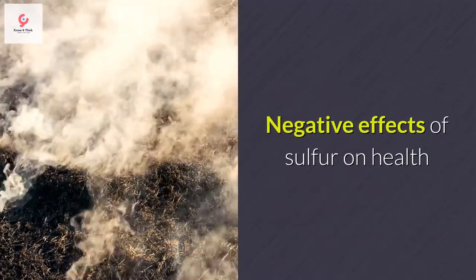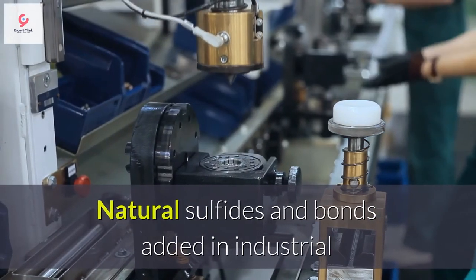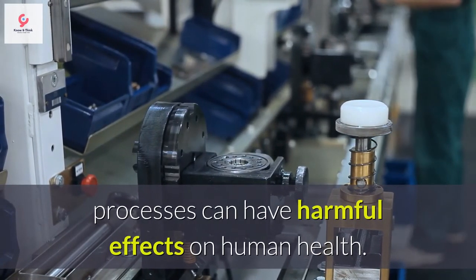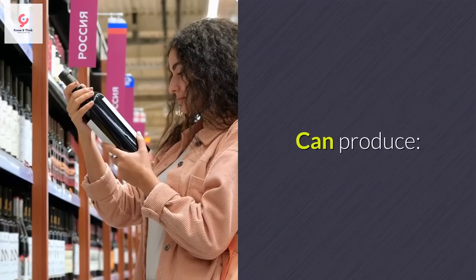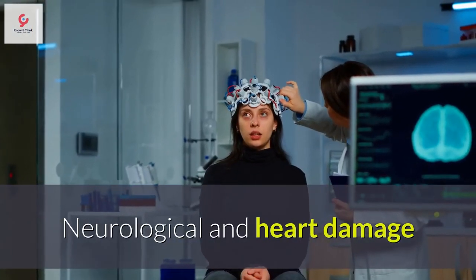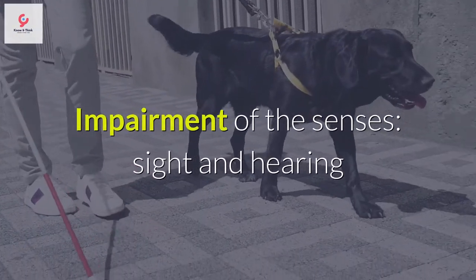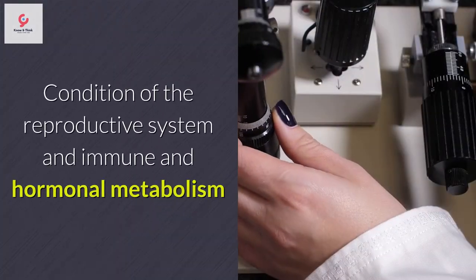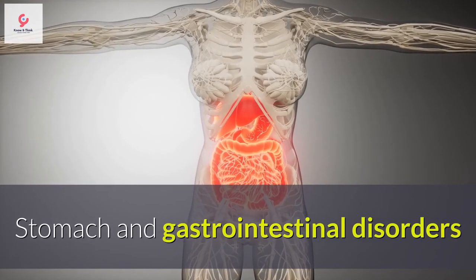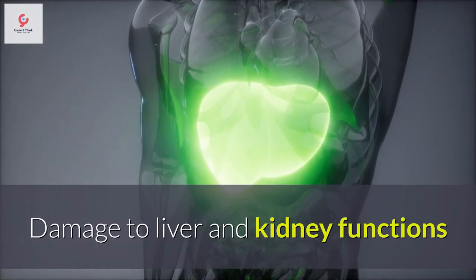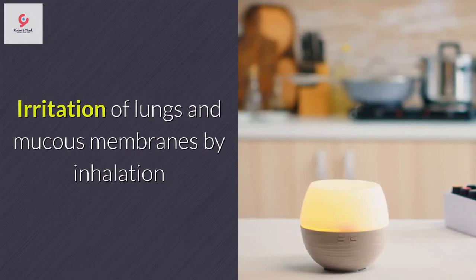Negative effects of sulfur on health: natural sulfides and bonds added in industrial processes can have harmful effects on human health. To avoid them, safe handling practices should be followed. Effects can include neurological and heart damage, behavior changes, impaired circulation and respiration, impairment of the senses (sight and hearing), conditions of the reproductive system and immune and hormonal metabolism, stomach and gastrointestinal disorders, damage to liver and kidney functions, skin irritation on contact, and irritation of lungs and mucous membranes by inhalation.